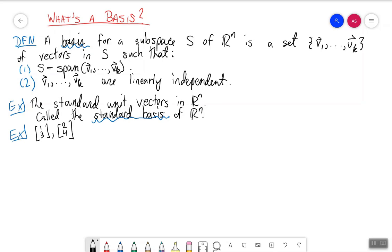We've seen already that the vectors [1,3] and [2,4] span R^2, but these vectors are also linearly independent. So they are also linearly independent. And therefore, by the definition of basis, they form a basis for R^2.